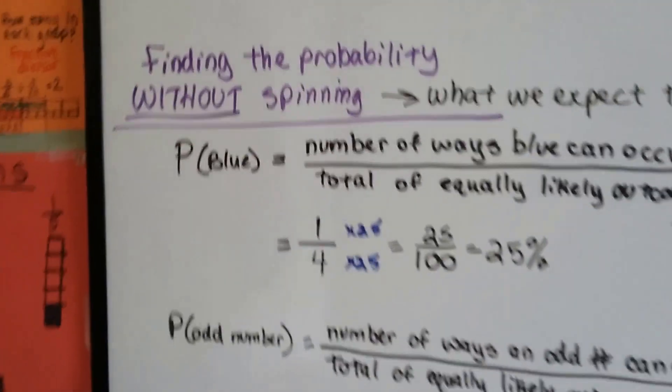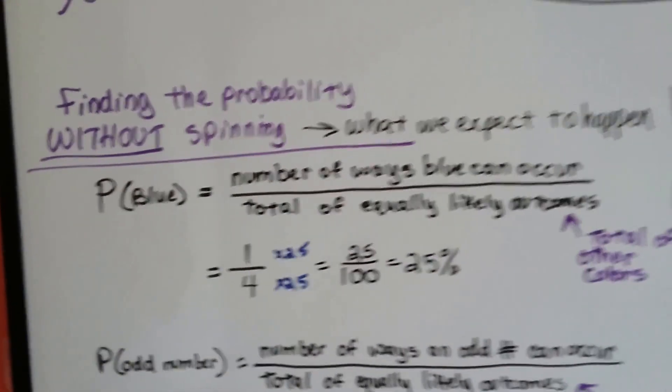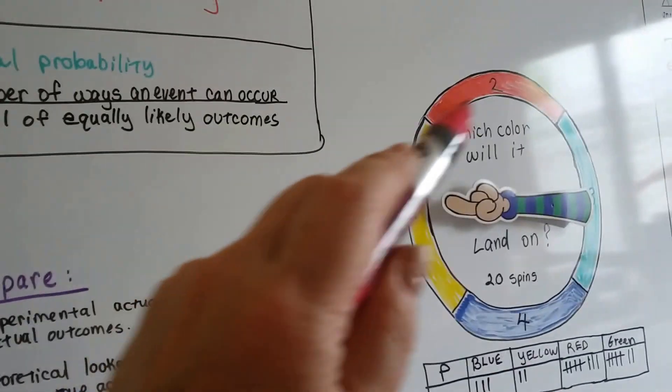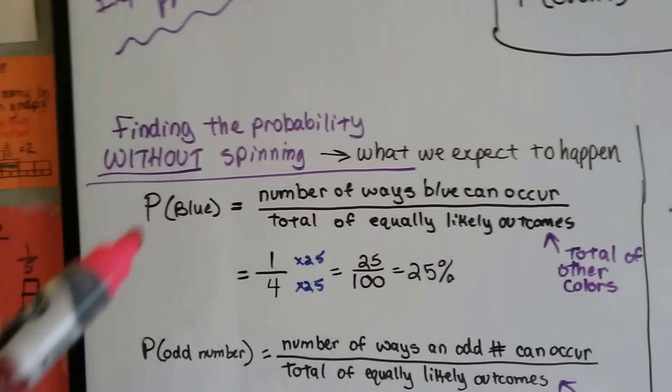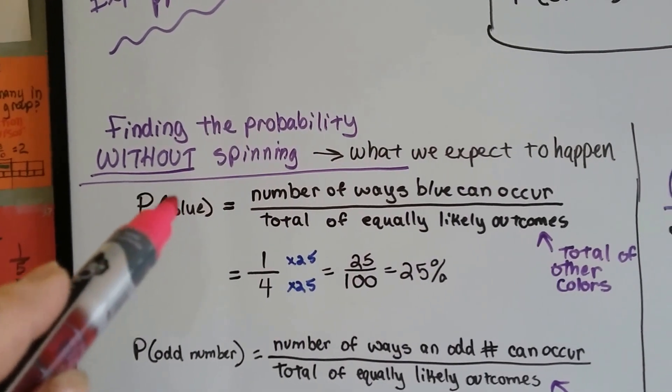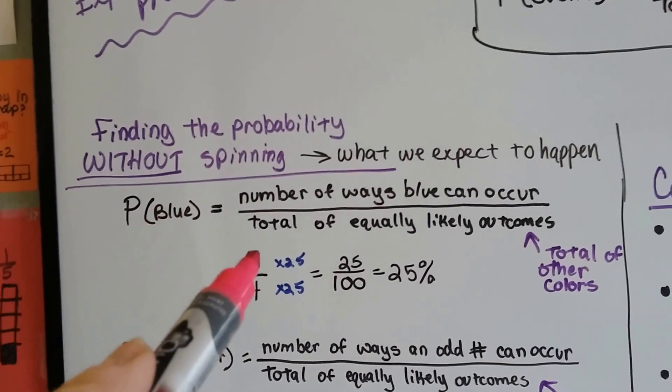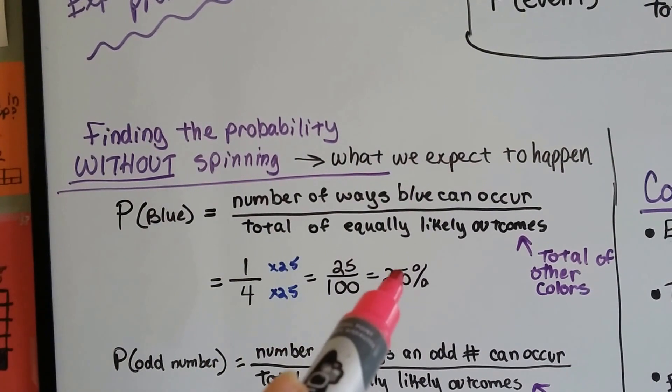Now, according to theoretical probability, which we figure without spinning, we look at the fact that the color wheel has 4 colors. Yellow, red, green, and blue. And that the chance of it landing on blue, the event of blue happening, is a 1 out of 4 chance, or 25% chance.